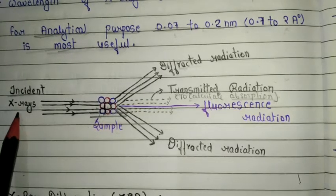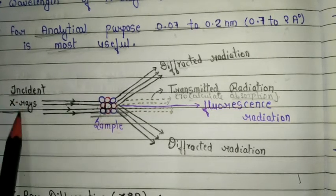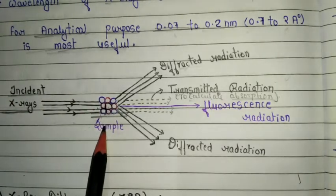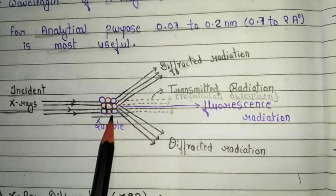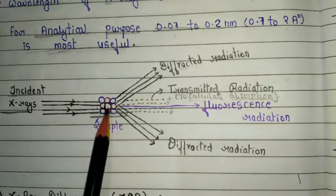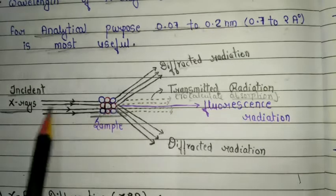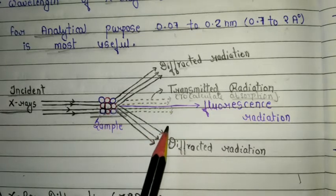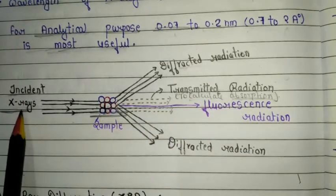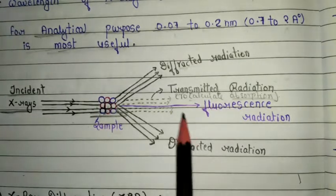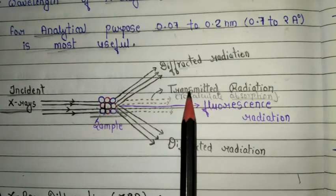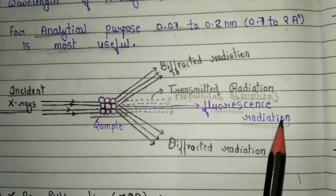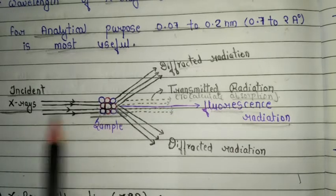We use X-ray as a radiation source. When incident X-ray strikes the sample — the sample has a certain crystal structure — three kinds of radiations are emitted. The first is diffracted radiation, the second is transmitted radiation, and the third is fluorescence radiation. These are the three important radiations we get after incident X-ray strikes the sample.